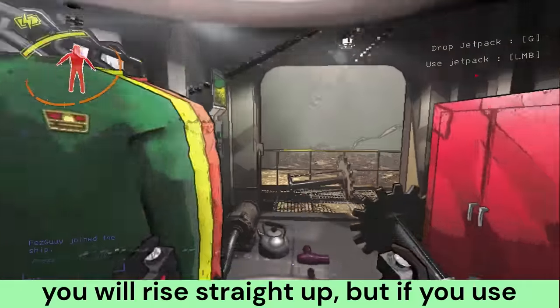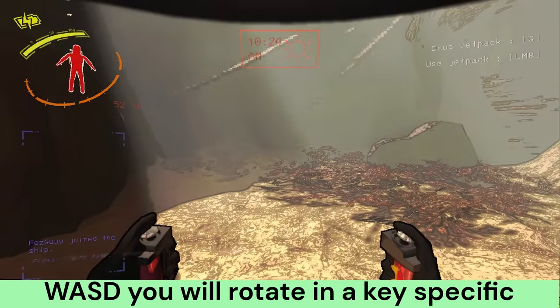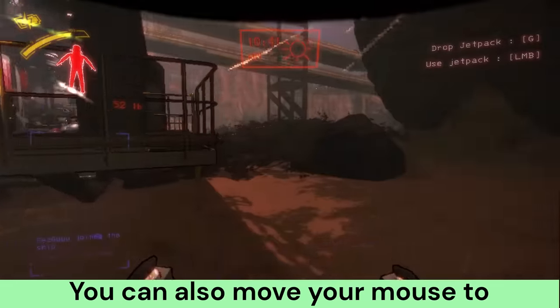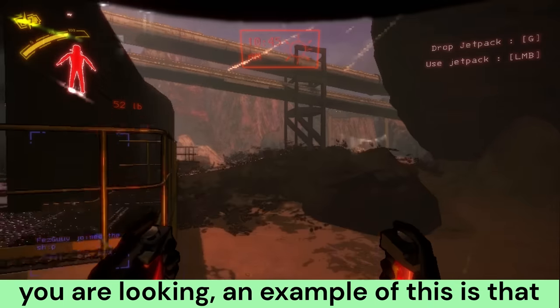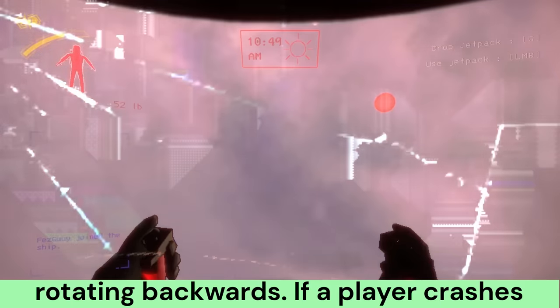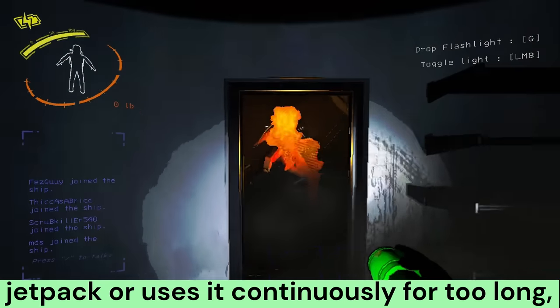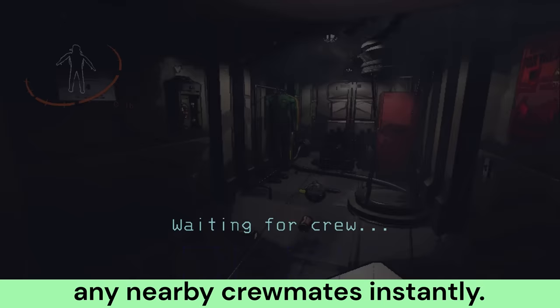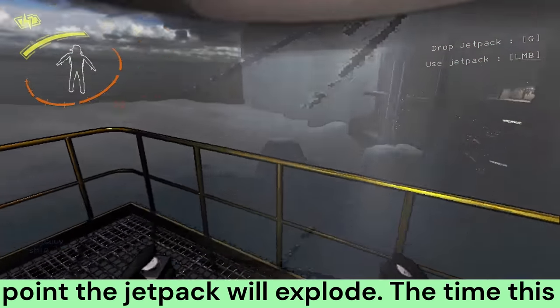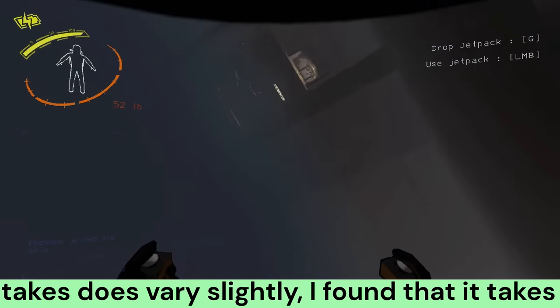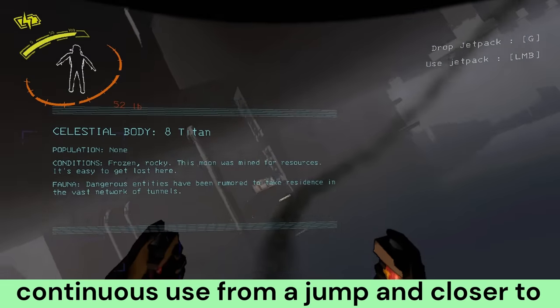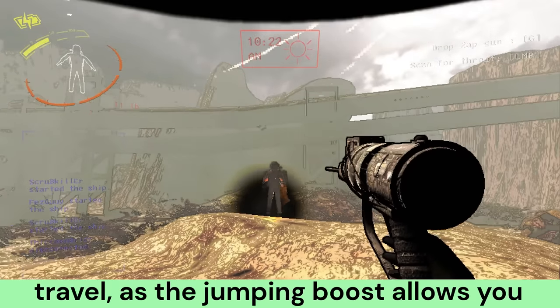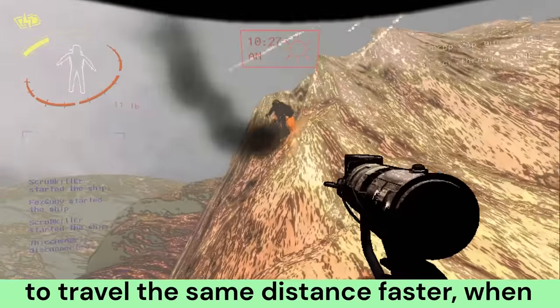The main purpose of the jetpack is to get you around the outdoor map quickly. When flying, if no other keys are pressed, you will rise straight up, but if you use WASD, you will rotate in a key-specific direction. You can also move your mouse to look around and rotate depending on where you were looking. An example of this is that looking up will result in you rotating backwards.